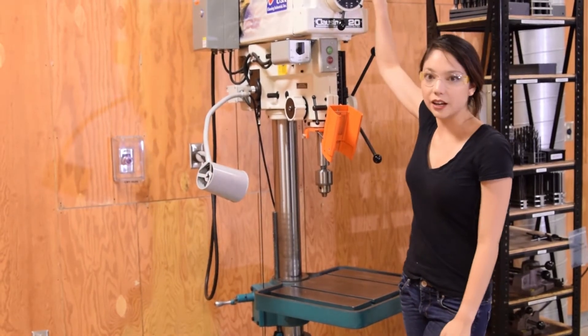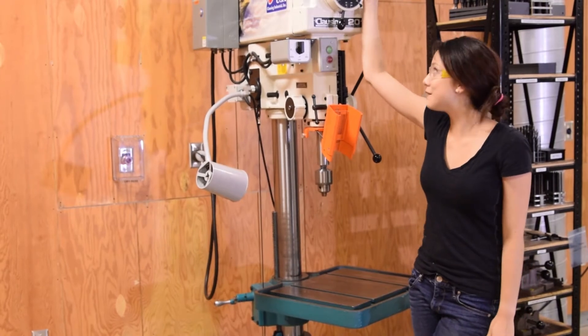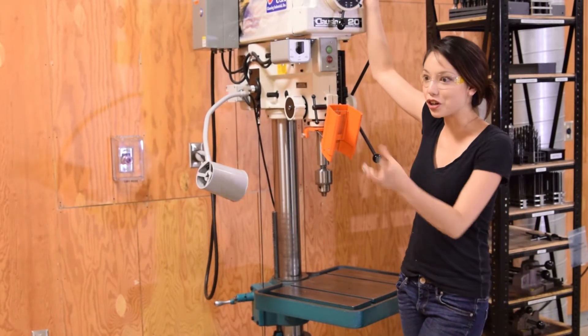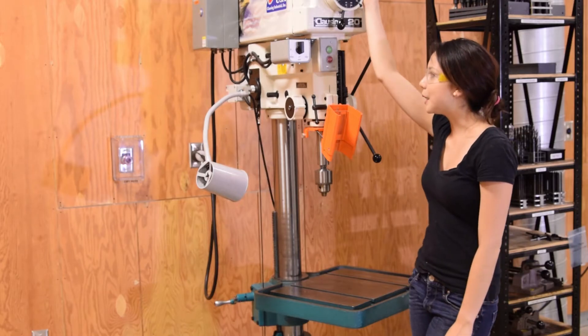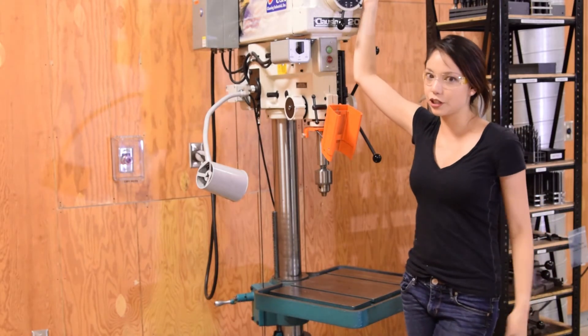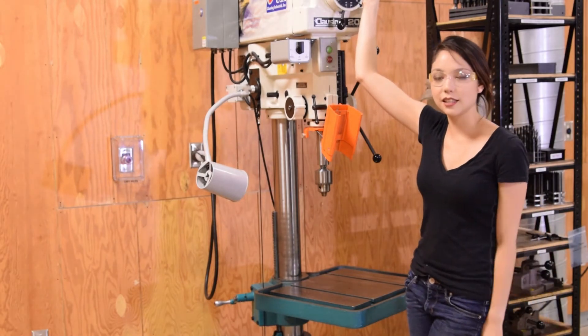You might have a machine with a more automatic turning system. There are also ones that have a digital display and you just turn a dial and it'll adjust it for you. But really everything you learned on the Jet applies exactly as it does to this Klausing. So we'll see you next time.